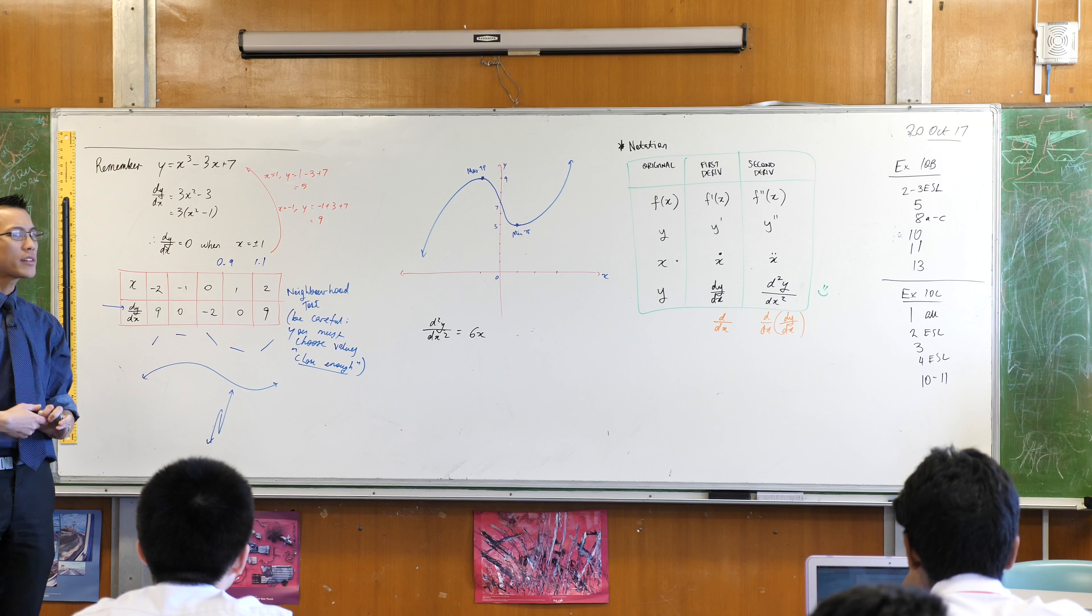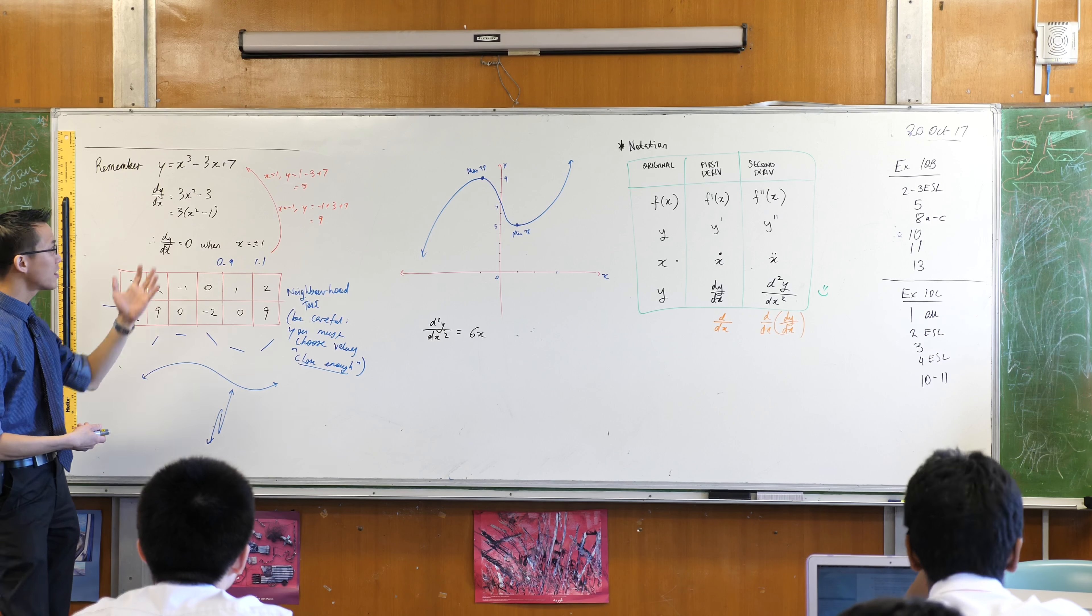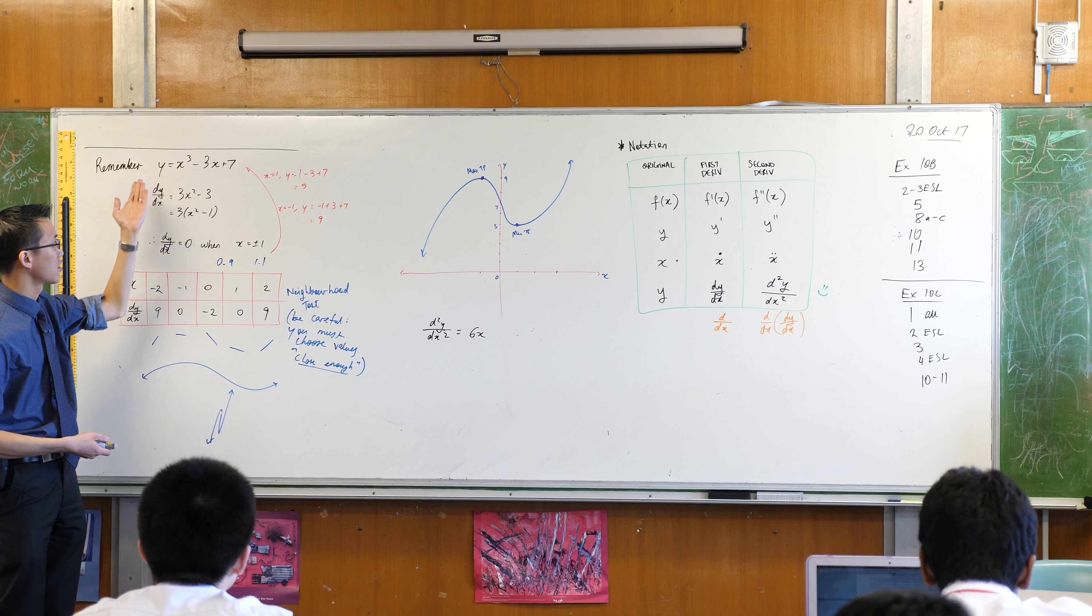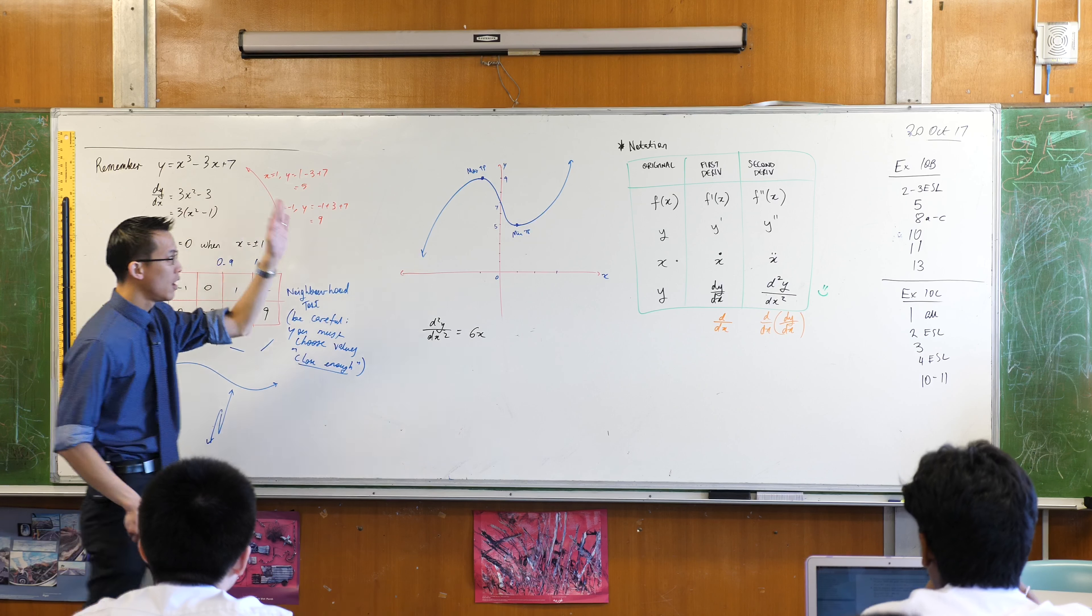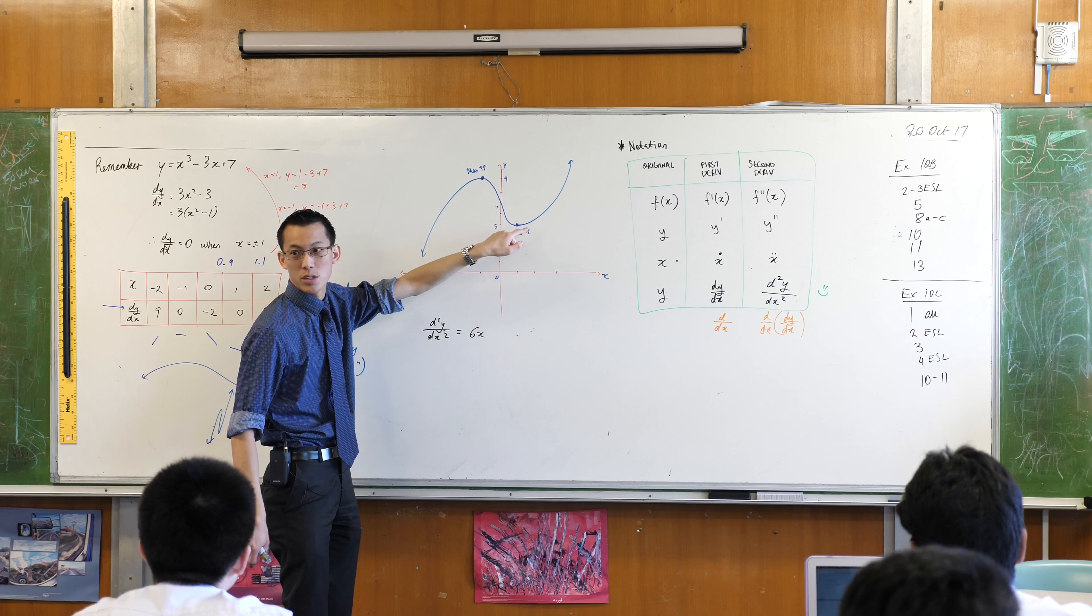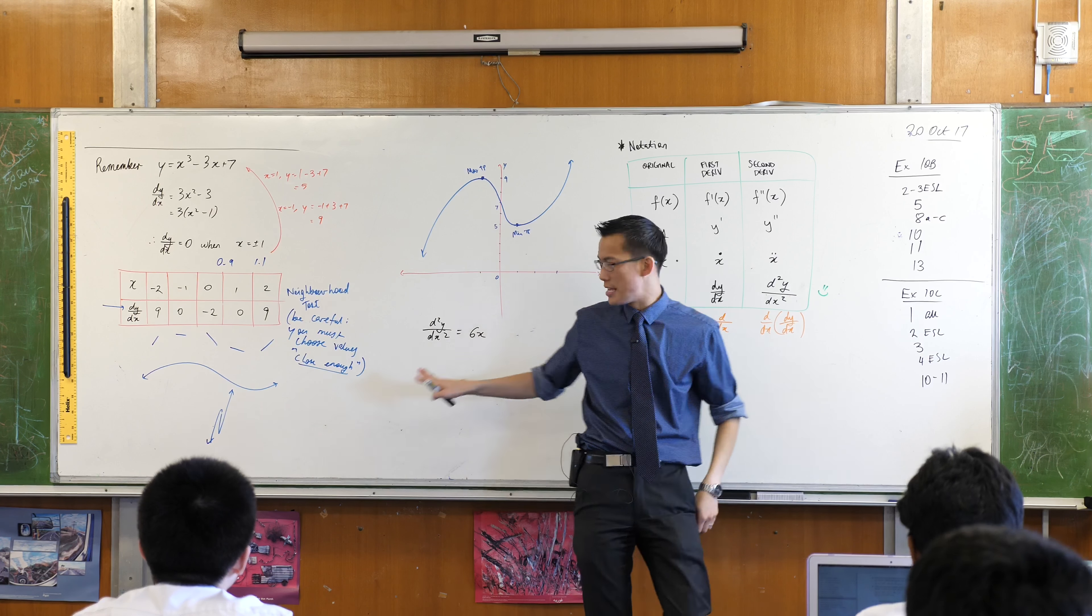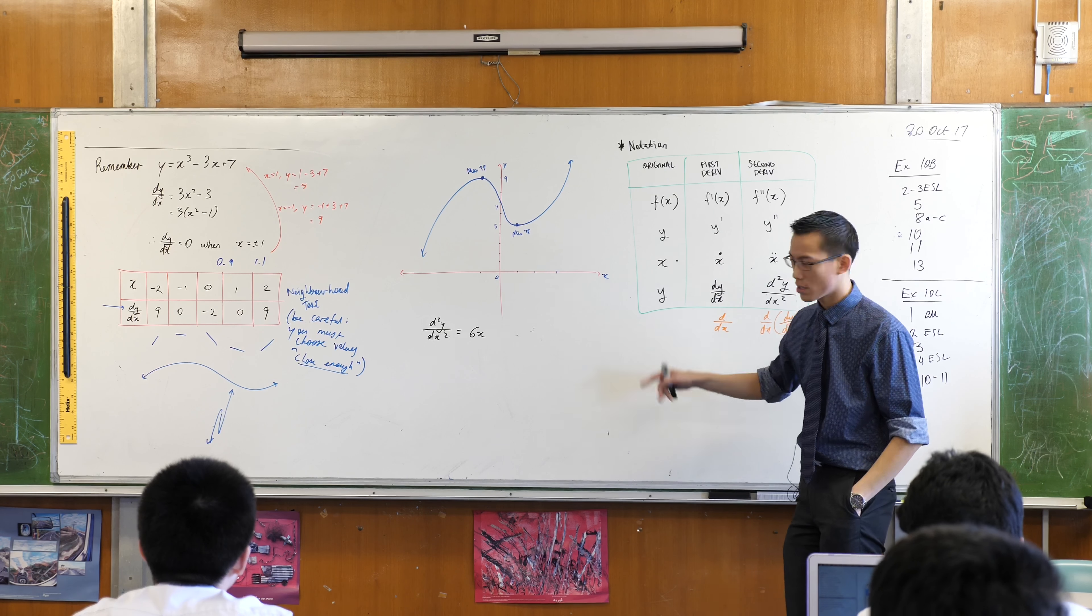Now, what does this thing mean? We know what the gradient function tells us. It tells us when this thing's positive, I'm going up. When it's zero, I get stationary points. When it's negative, I'm going down. But what does this tell us? What's going on?